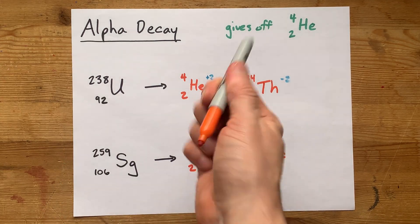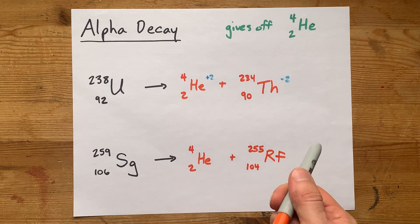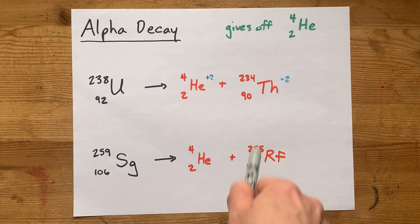Here's two alpha decay equations. Alpha decay is pretty straightforward. You're always getting an alpha particle out of it, and then your job is to figure out what the leftovers are.